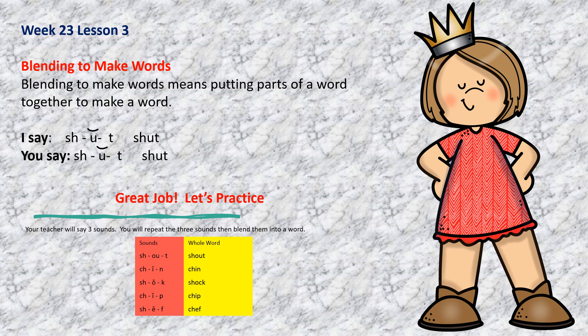Blending to make words means putting parts of a word together to make a word. Sh-a-t — shut. Do you hear the parts in the word shut? You try it. Repeat after me: sh-a-t — shut.